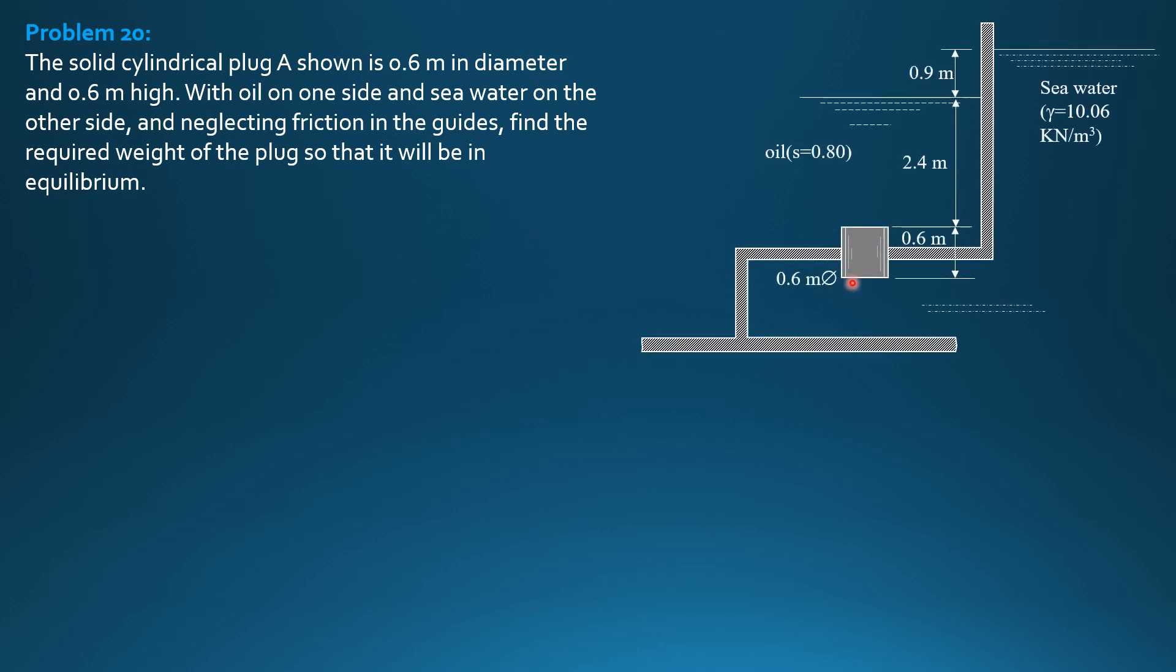So this is the given figure and we cannot apply the principle on buoyancy here because we have different liquids. Even if they are at the same level, we cannot apply the principle. We can only apply the principle on buoyancy when they are at the same level and they are of the same liquid.